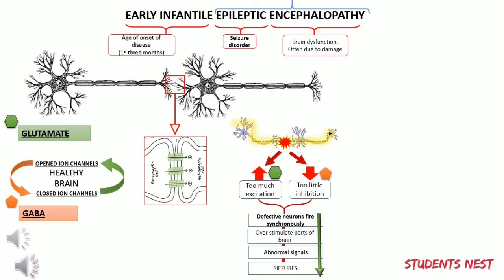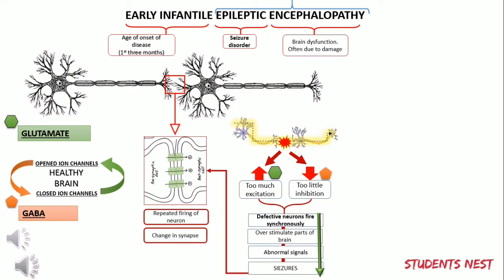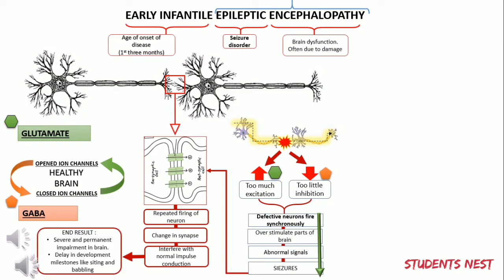Although the exact mechanism is not known, it has been observed that repeated firing of neurons during seizures can cause changes in the synapse, which interfere with normal impulse conduction. As EIEE manifests at an early age, the abnormal firing during sleep can affect brain areas involved in memory and learning. The end result is severe and permanent impairment in the brain and delay in developmental milestones like sitting and babbling.